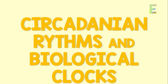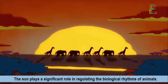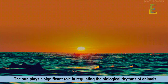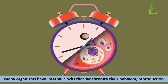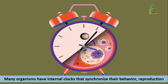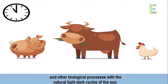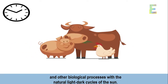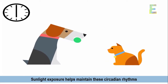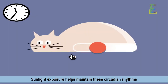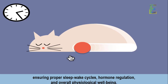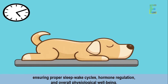Circadian Rhythms and Biological Clocks. The sun plays a significant role in regulating the biological rhythms of animals. Many organisms have internal clocks that synchronize their behavior, reproduction, and other biological processes with the natural light-dark cycles of the sun. Sunlight exposure helps maintain these circadian rhythms, ensuring proper sleep-wake cycles, hormone regulation, and overall physiological well-being.